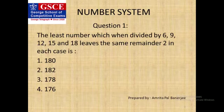This question can basically be solved by two processes. We have to check the options. Considering the first option, 180 — when divided by 6, 9, 12, 15 and 18 — we need to check if it fulfills the criteria.